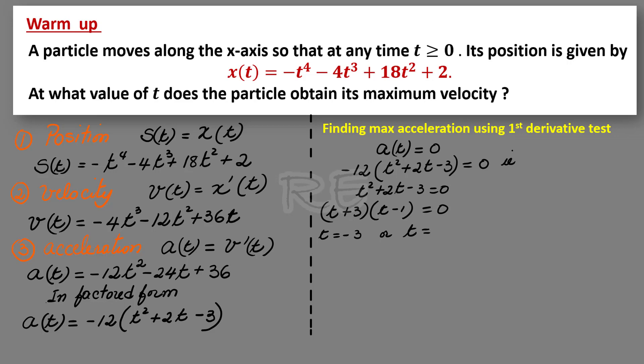The two zeros are t is equal to negative 3 and t is equal to 1. Negative 3 will be rejected, since time cannot be negative.